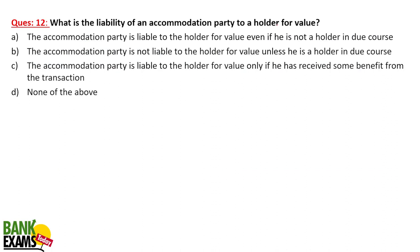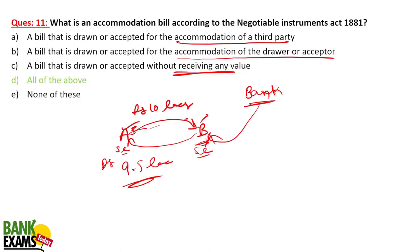What is the liability of an accommodation bill to a holder for value? The accommodation party is liable to the holder for value even if the holder is not a holder in due course. B's liability stands no matter what — whether or not he received any benefit does not matter. He cannot avoid his liability because he made his signature on the bill of exchange. The bank gave the loan on the basis of B's acceptance, assuming that on the due date B would pay Rs. 10 lakh. Once B legally accepted that bill, he created his liability.